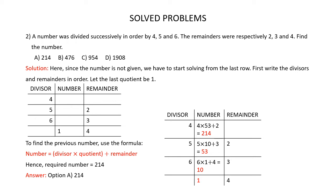In this problem, since the number is not given, we have to start solving from the last row. First, write the divisors and remainders in order. Let the last quotient be 1. To find the previous number, we use the formula: number = divisor × quotient + remainder. So we have 1 as the last quotient. To get the previous number, multiply 6 by 1 and then add 4: 6 × 1 + 4 = 10.